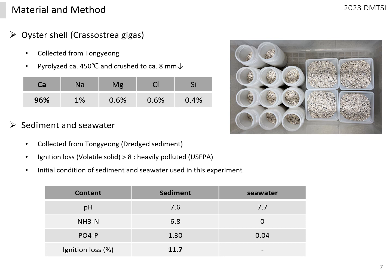The ignition loss temperature of 450 degrees indicated that most of the components of the oyster shell are calcium carbonate. Sediment and seawater were also collected from Tongyeong, and dredging soil was used for the sediment. The initial conditions of sediment and seawater are shown in the table below, and the ignition loss was about 12 percent. According to the United States Environmental Protection Agency, the sediment is in a highly contaminated condition.